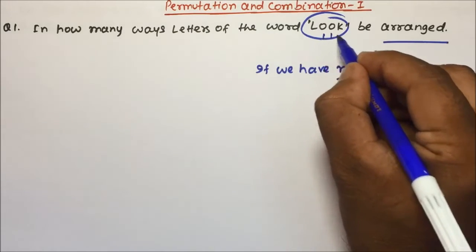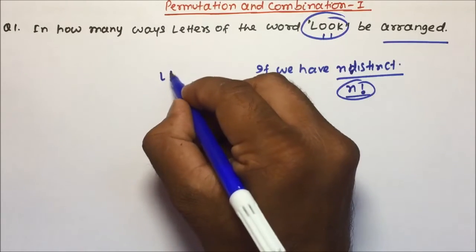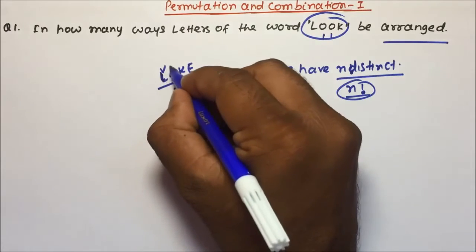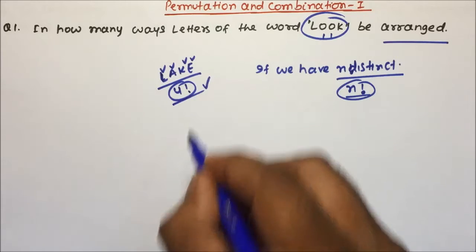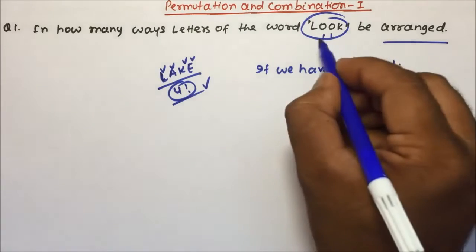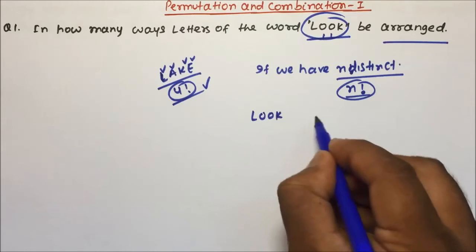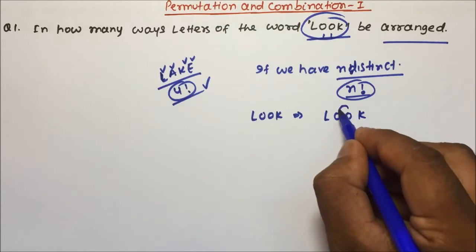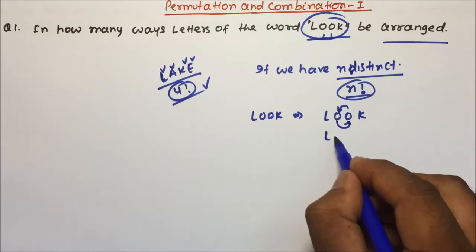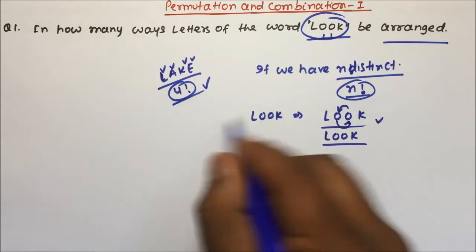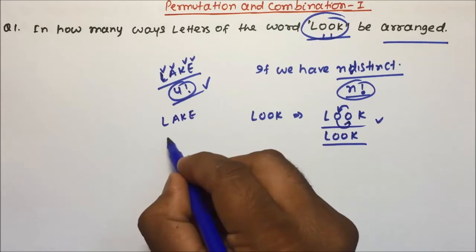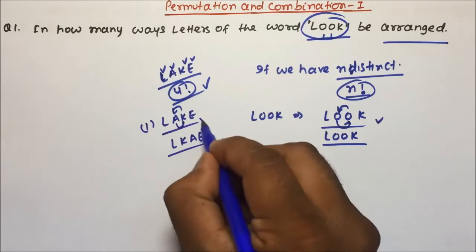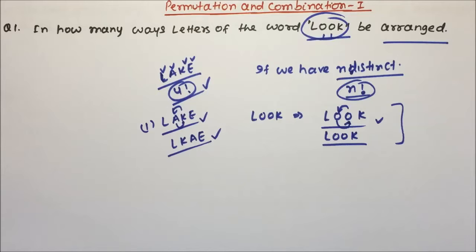But here you see O and O are repeated — this is not distinct. Instead of LOOK, if we had the word LAKE, all four letters are distinct, so we could arrange them in 4 factorial ways. But with LOOK, if you swap the two O's, the word remains the same. That is not the case with LAKE — swapping A and K gives LKAE, which is a different word. So when letters are not distinct, we need a different approach.